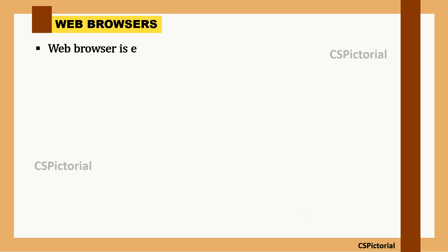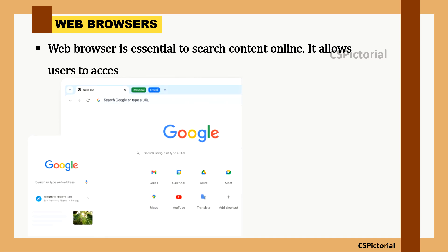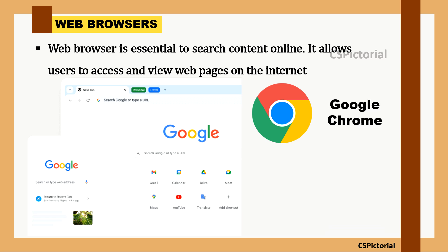A web browser is essential to search any content online. It allows users to access and view web pages on the internet, translating web pages written in code into the human-readable text and images you see on your screen. Popular web browsers include Google Chrome, Mozilla Firefox, and Microsoft Edge.